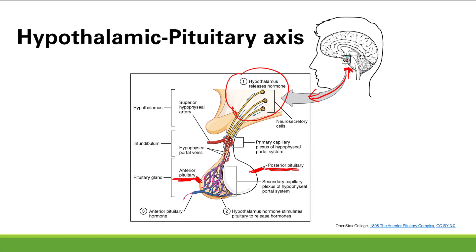What happens in this axis is the hypothalamus is going to release hormones — it's going to make them and send them down. Some of those hormones will act on the anterior pituitary gland directly, causing it to synthesize its own hormones. The anterior pituitary's hormones are then sent out into blood circulation to go to various target organs to exert their effects.